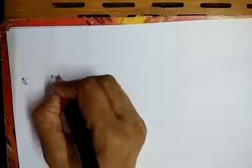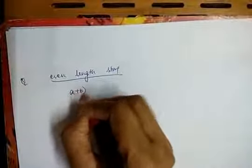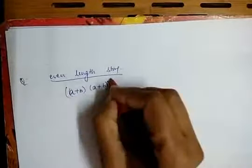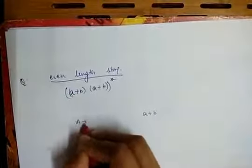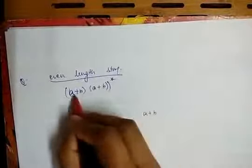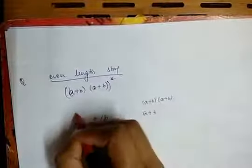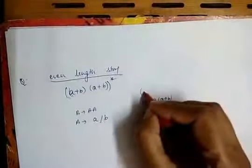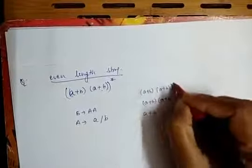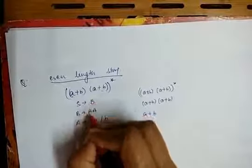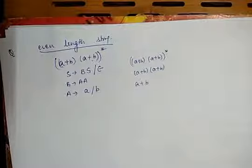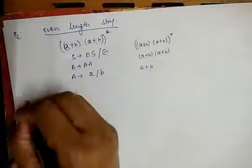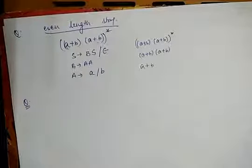One more example: construct a grammar for even-length strings. The regular expression is ((a+b)(a+b))*. We introduce A for a+b: A → a | b. Then B for two characters: B → AA. The grammar is: S → BS | ε, B → AA, A → a | b, which generates all strings over {a, b} of even length.